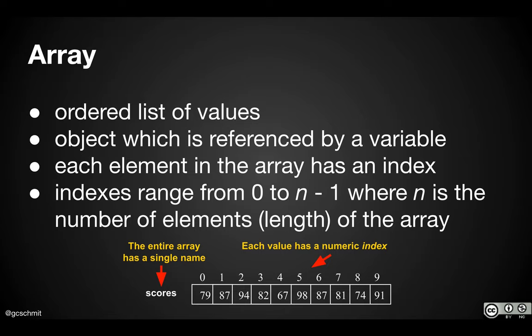An array is an ordered list of values — there are multiple values all stored in the same array. Think of it as like a bin with a whole bunch of subdividers, and we can put different values in each little subdivided section. It's ordered, meaning one value is first and a different value is last, with all the values in between. Arrays are kind of like objects in Java, but they're not.